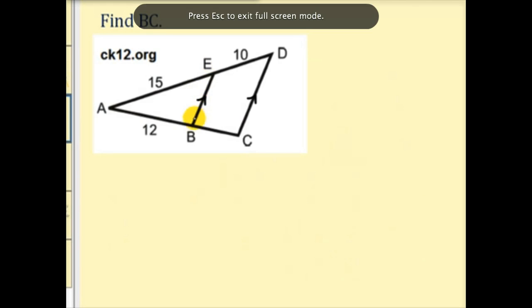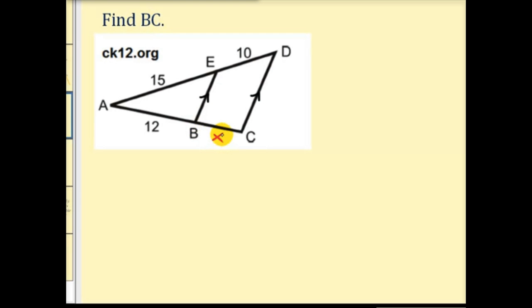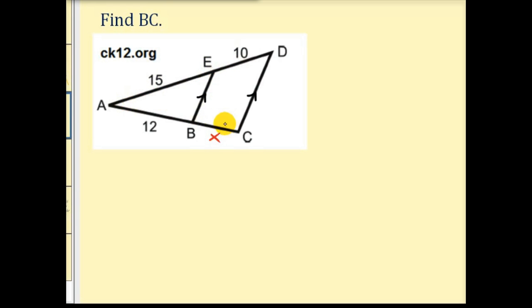So in this problem notice that segment BE is parallel to segment CD. And we want to determine the length of segment BC. So let's go ahead and label this with an X here. So this example is pretty straightforward. This parallel line cuts these two sides of the triangle so that the segments are proportional. Which means that X to 12 would be equal to 10 to 15.